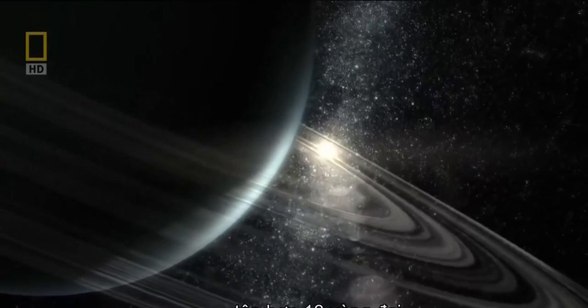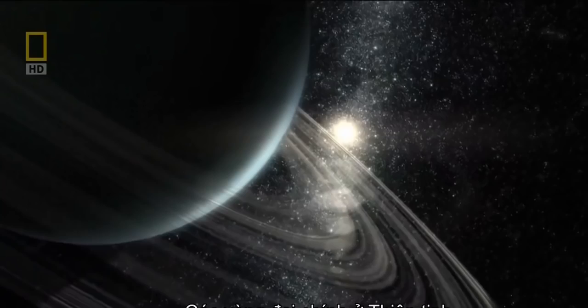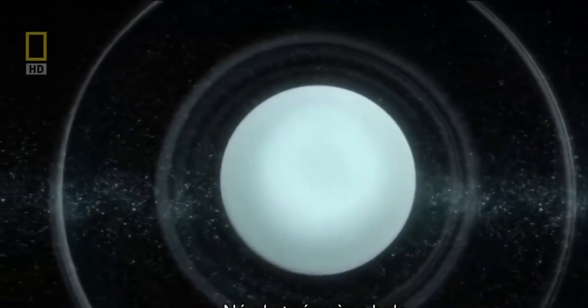Its collection of 13 razor-thin rings. Uranus's main rings are very tightly confined with a lot of space in between them, sort of like a series of hula hoops, increasingly large hula hoops moving away from Uranus. How these rings form, no one's completely sure.